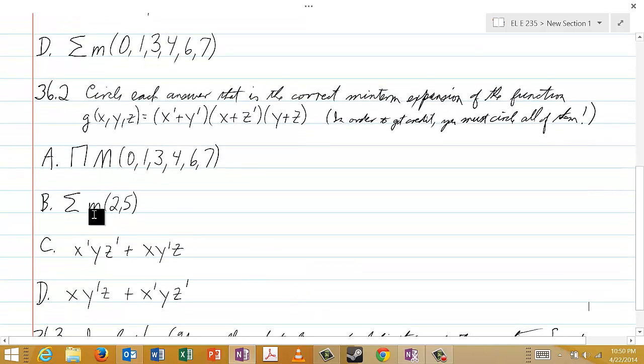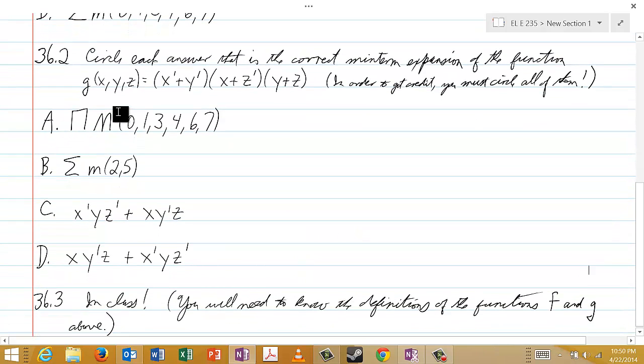And so here the choices are the product of capital M zero, one, three, four, six, and seven, the sum of little m two and five, c is x prime, y, z prime, or x, y prime, z, and d is x, y prime, z, or with x prime, y, z prime.